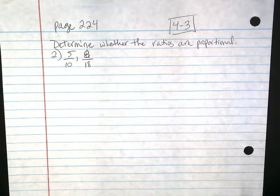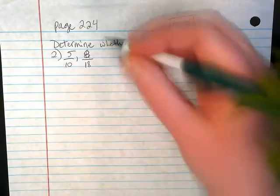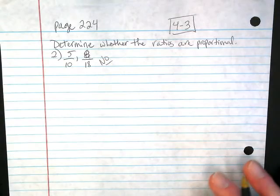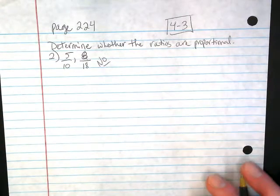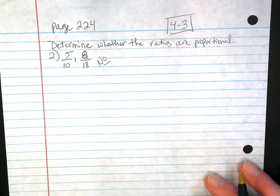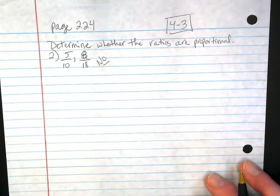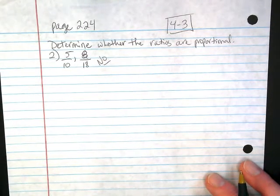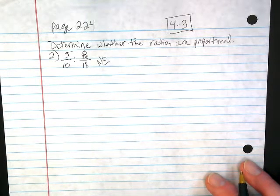Why are we saying no? You're right. They are not proportional, but who can tell me why? Monty, what did you do in your head to say no? Because you can't multiply five to equal eight. True.